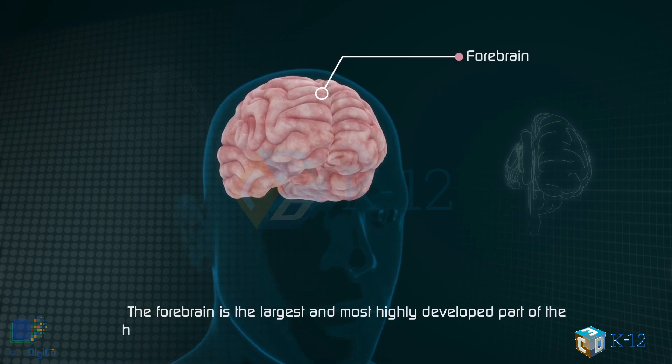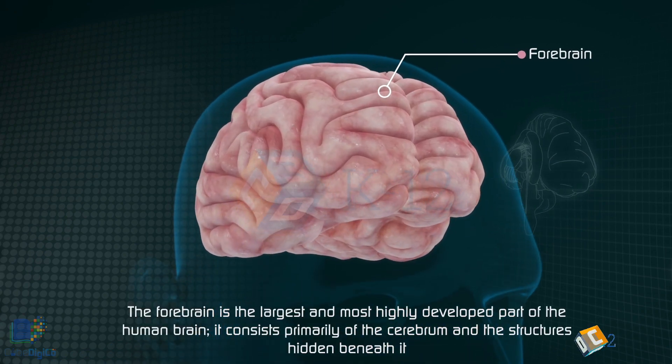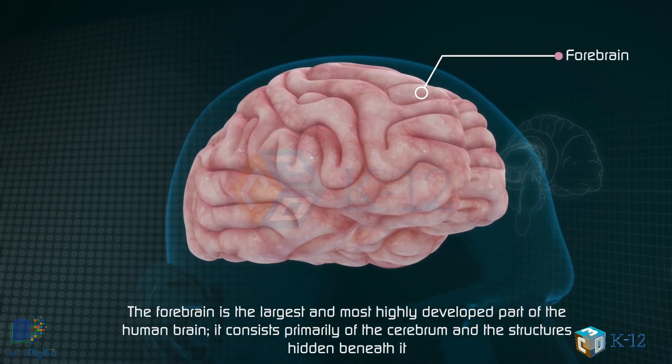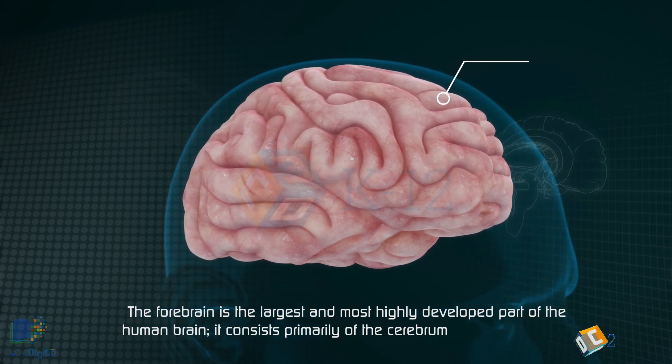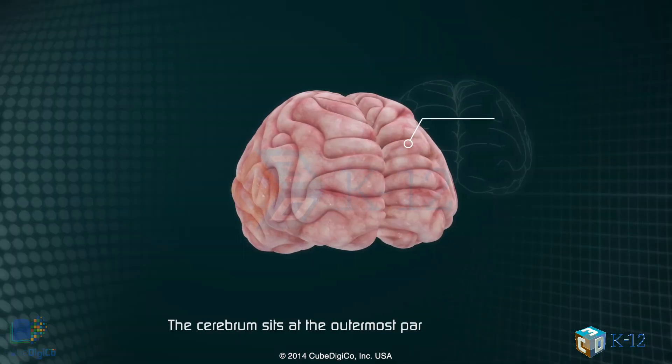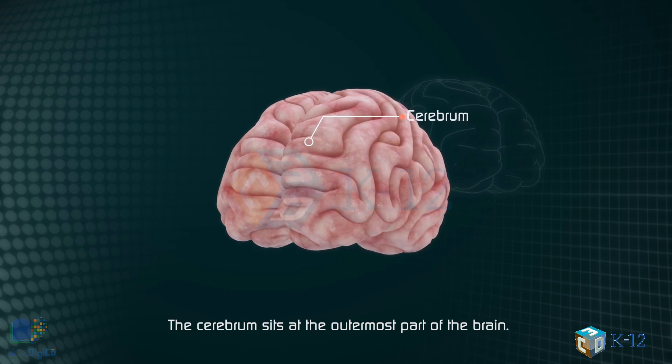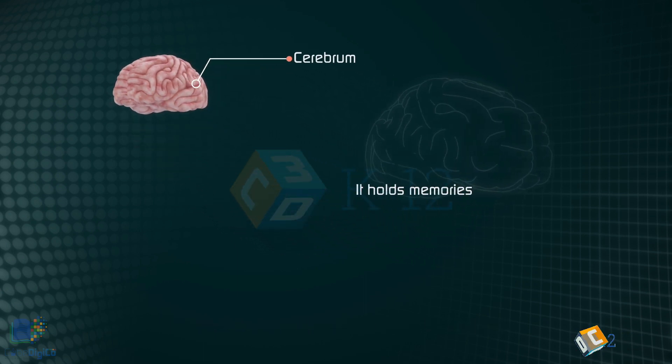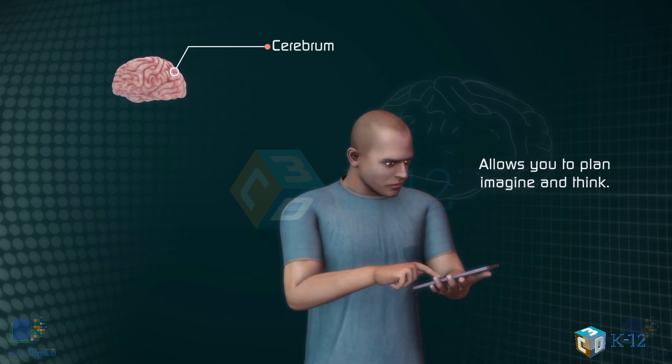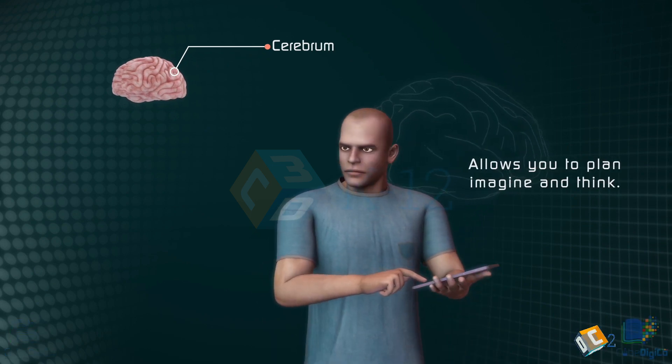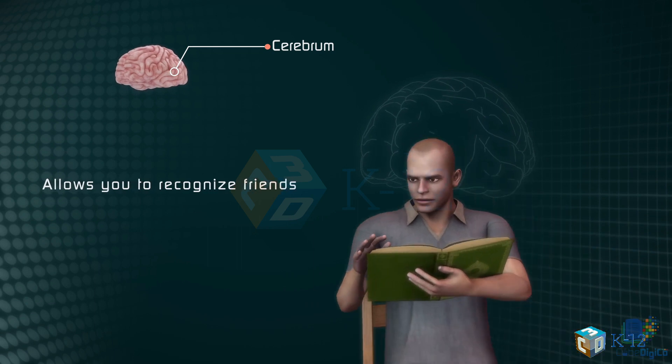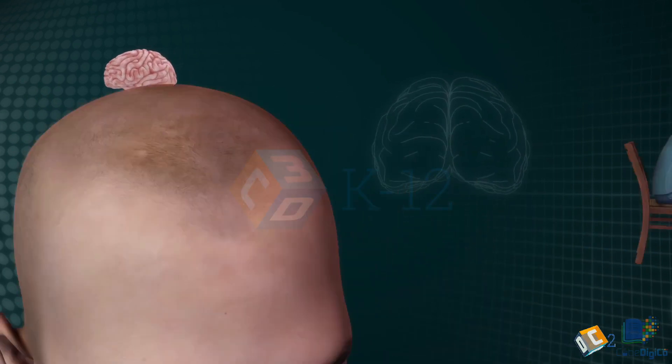The forebrain is the largest and most highly developed part of the human brain. It consists primarily of the cerebrum and the structures hidden beneath it. The cerebrum sits at the outermost part of the brain and is the source of intellectual activities. It holds your memories, allows you to plan, enables you to imagine and think. It allows you to recognize friends, read books, and play games.